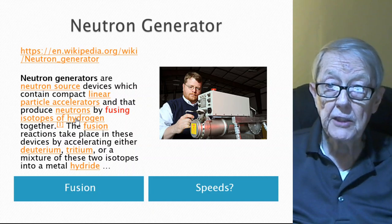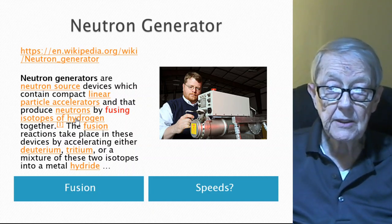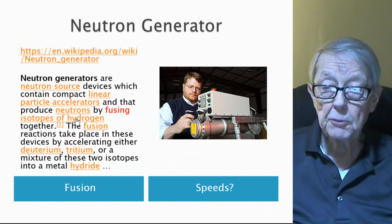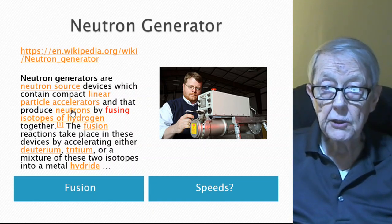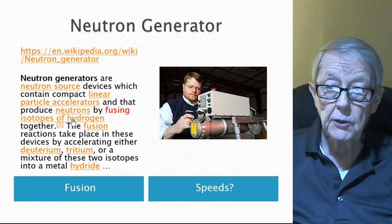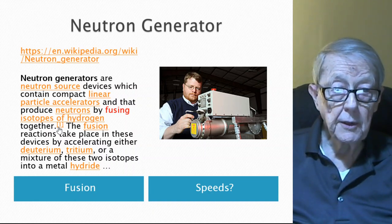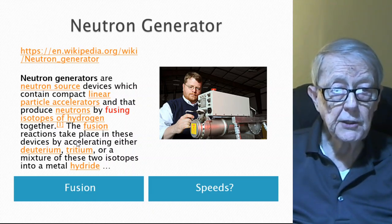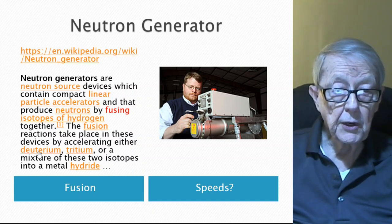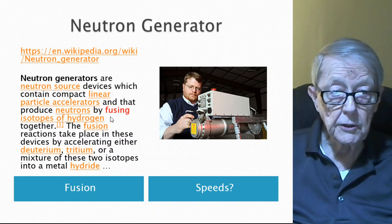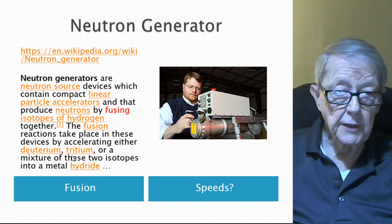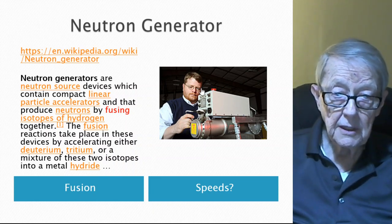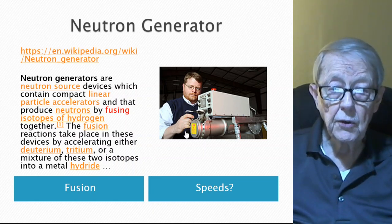This is not the fission where you hit a, take a neutron and use it to smash. Maybe this is what they use it to smash, the isotopes that I talked about earlier. The fission reactions take place in these devices by accelerating either deuterium or tritium, which is a result of fusion, or a mixture of these two. Interestingly enough, this is a neutron generator.